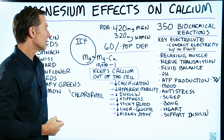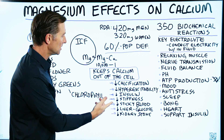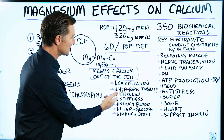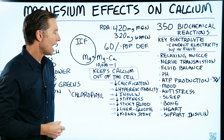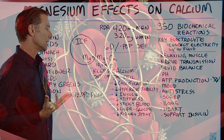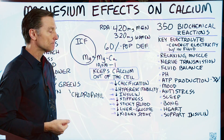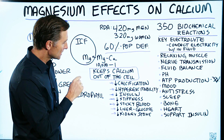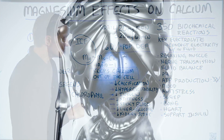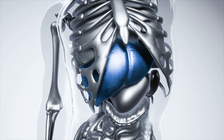Having enough magnesium can prevent calcium from causing stiffness and sticky blood, which can lead to excess clotting. Also, having enough magnesium actually prevents the liver from producing too much glucose.